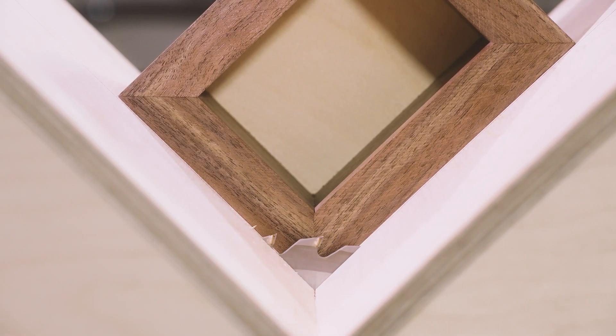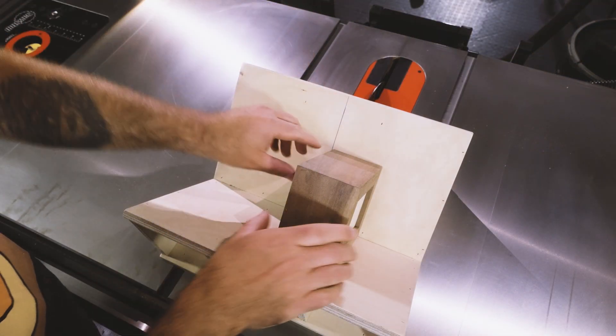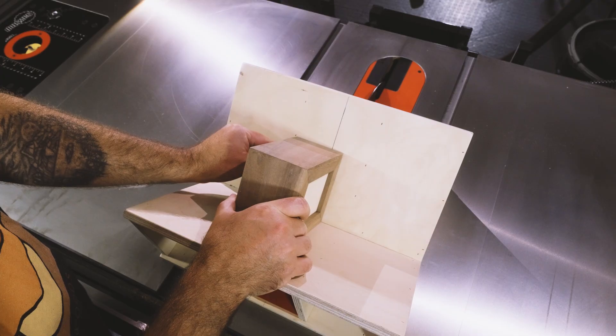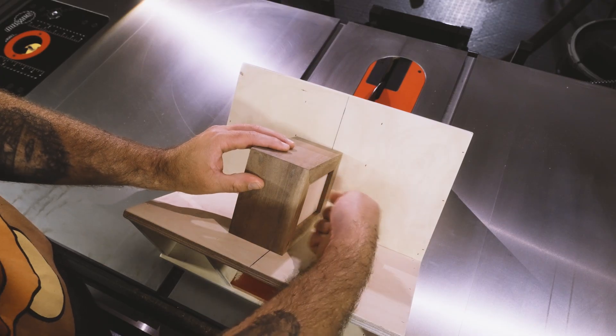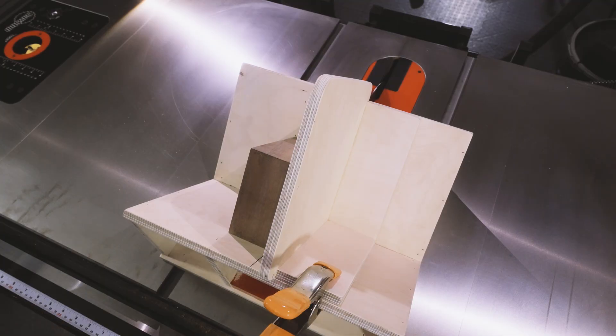Place the box on the jig and raise up the blade so that it's below the inside corner. We can use these lines as an indicator to know where the miter key slots will be cut, but make sure we're not cutting where our bottom piece is. Then place the jig fence up against the box and clamp it in place.